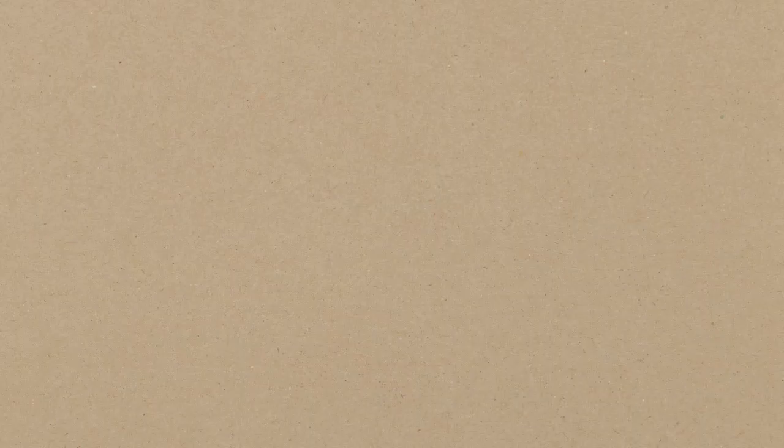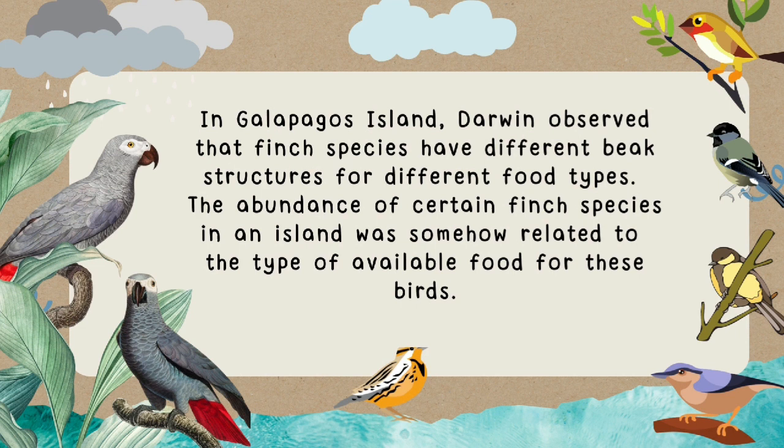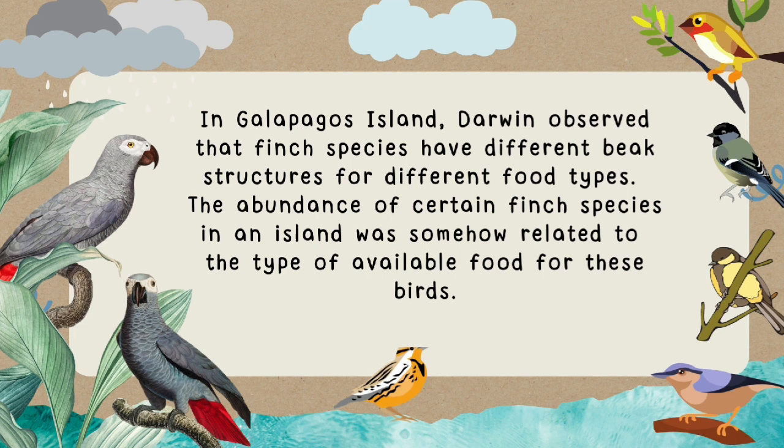In the Galápagos Islands, Darwin observed that finch species have different beak structures suited for different food types. The abundance of certain finch species on an island was somehow related to the type of food available for those birds.